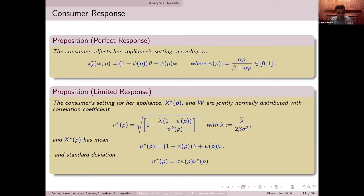If you look at the mean, it resembles what we had before except that W is replaced by mu — on average, my thermostat setting is essentially the same as before, but now I have some fluctuation. If lambda is too high, this correlation is going to be zero, meaning that consumers with a high cost of processing information become completely non-responsive to what's happening in the ambient environment. But as lambda decreases, the correlation between my decision and what is happening in the ambient environment increases and becomes larger.